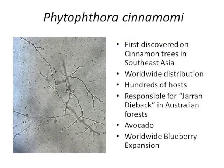It comes from the Greek words phyto and thora, which means plant destroyer. This particular plant destroyer was named after the host it was first found on — cinnamon trees in 1922 in Southeast Asia. Since then, with globalization and human activity, we've spread it all around the world, and it's pretty much everywhere.